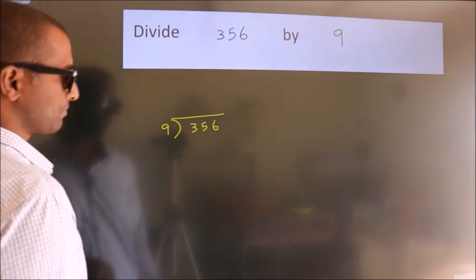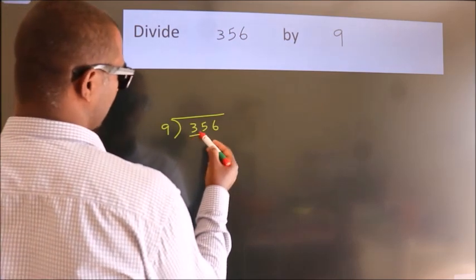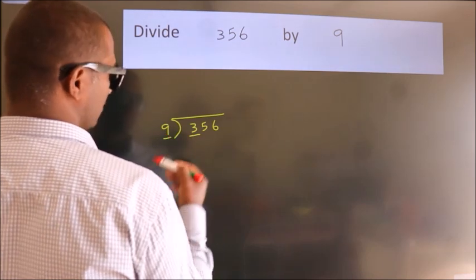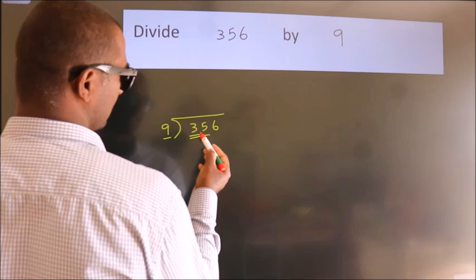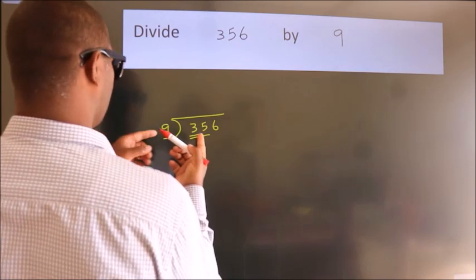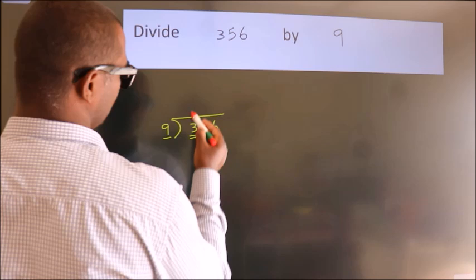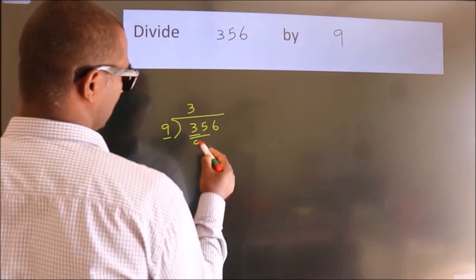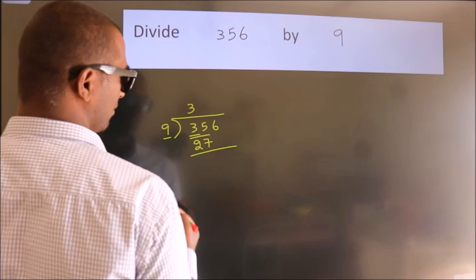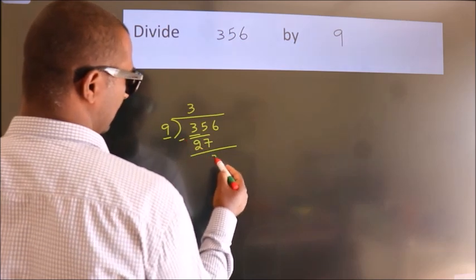Next, here we have 3, here 9. 3 is smaller than 9, so we should take 2 numbers: 35. A number close to 35 in the 9 table is 9 threes, 27. Now we should subtract. We get 8.